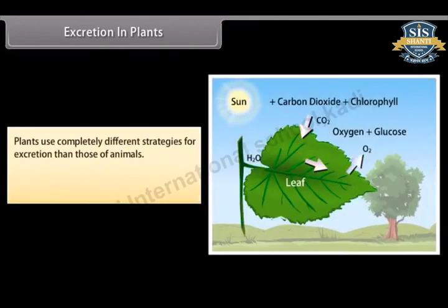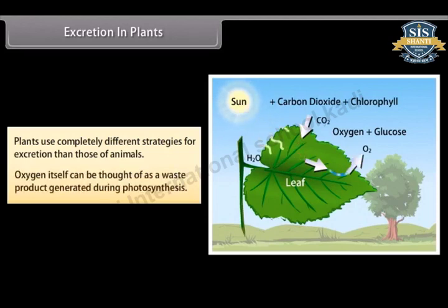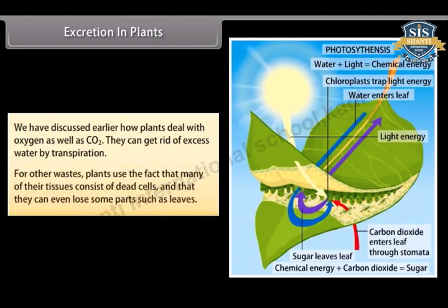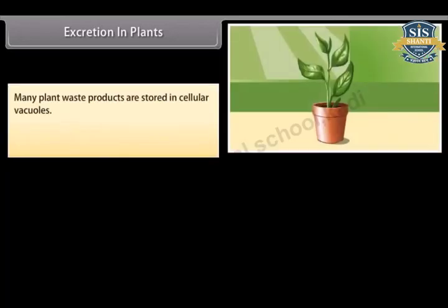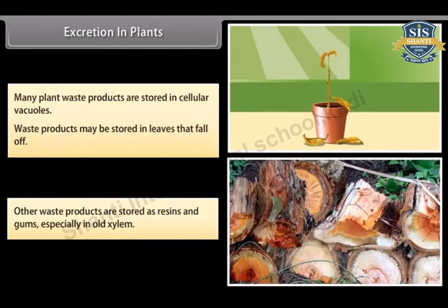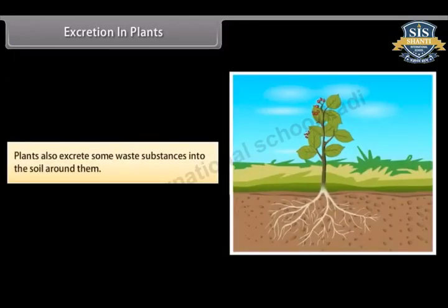Plants use completely different strategies for excretion than animals. Oxygen itself can be thought of as a waste product generated during photosynthesis, and plants can get rid of excess water by transpiration. For other wastes, plants use the fact that many of their tissues consist of dead cells, and they can even lose parts such as leaves. Many plant waste products are stored in cellular vacuoles or in leaves that fall off. Other waste products are stored as resins and gums, especially in old xylem. Plants also excrete some waste substances into the soil around them.